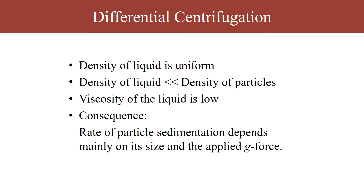Suppose your teacher tells you to separate mitochondria, chloroplasts, or ribosomes from a cell homogenate — how will you do that? The answer is by differential centrifugation. What is important in differential centrifugation is that we separate these biological particles depending on the difference in sedimentation rate, which can be dependent on the size, shape, and density of these particles.